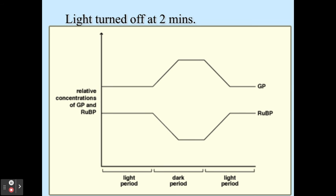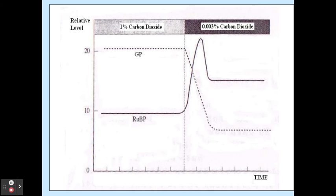These are the graphs that you may get in relation to those factors — showing a buildup of certain products or a decrease of certain products. It might be worth pausing and figuring out why things are building up or decreasing, based on the cycle we've just gone through. Here's another example showing a higher versus lower carbon dioxide concentration and its impact on GP and RuBP concentrations.